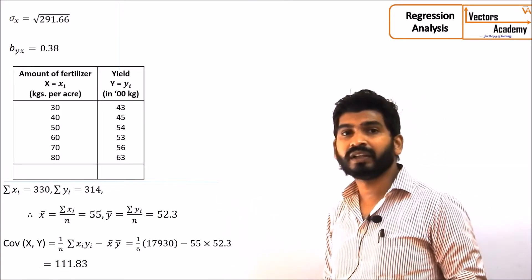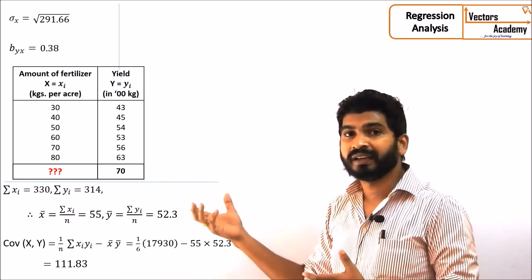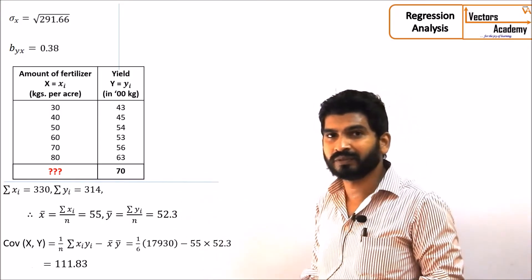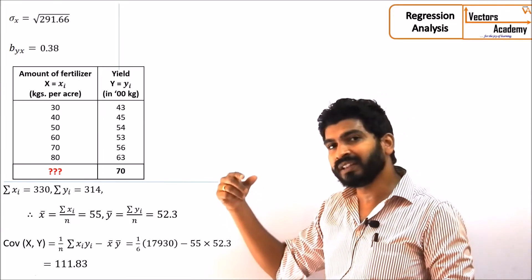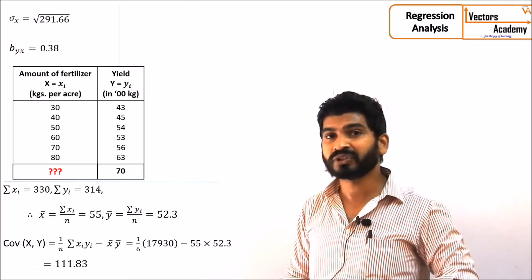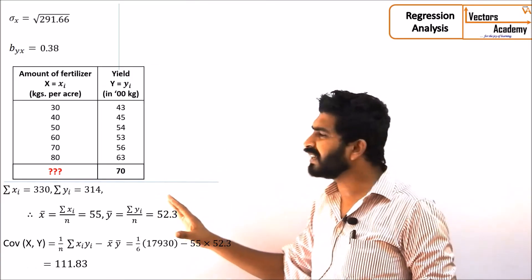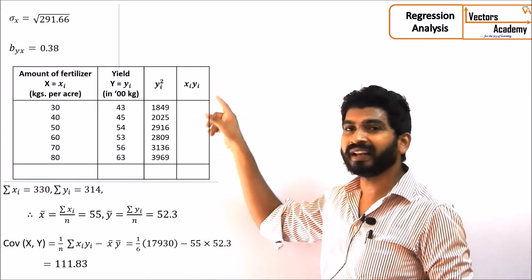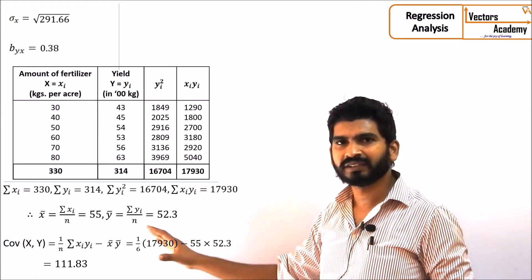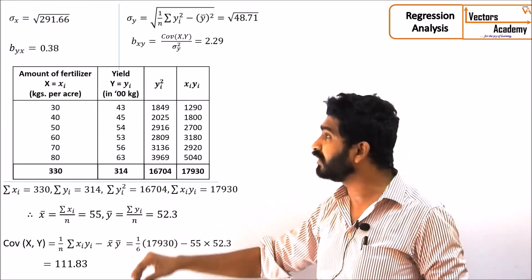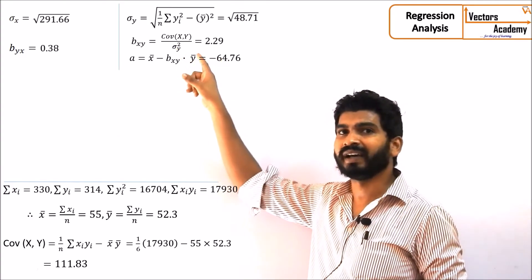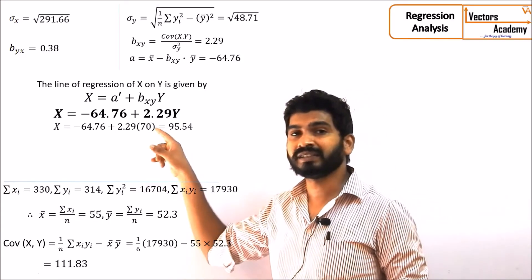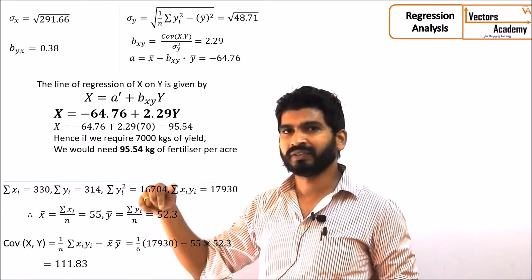In exactly the same way, we can find out the regression equation of x on y. Suppose the question is that I need 70 kgs of yield — what amount of fertilizer should I use? If we know the values of y and need to predict the values of x, that can be found out by the regression equation of x on y. Just as we made the table with x squared and xy, we now make a table with y squared and xy. We find the covariance of xy (which is already known), then find b_xy. The formula changes accordingly, and then we can find out the regression equation of x on y, by which we can predict the values of x which depend upon y.